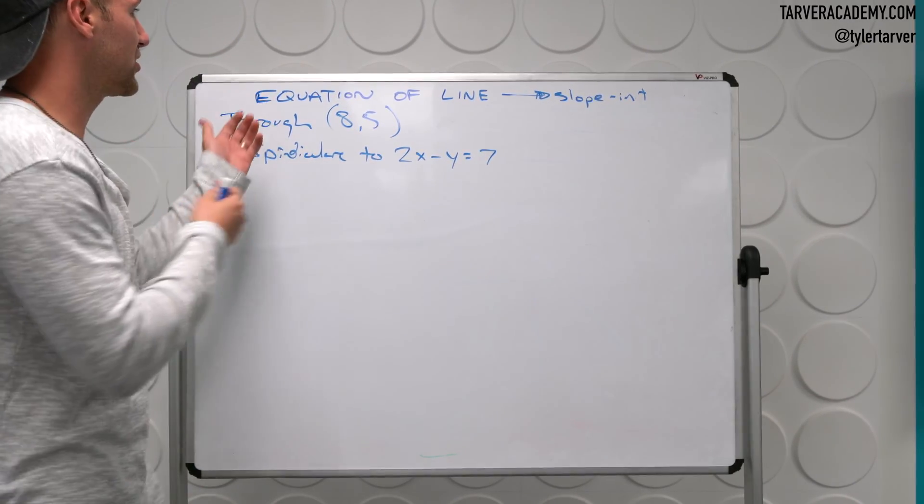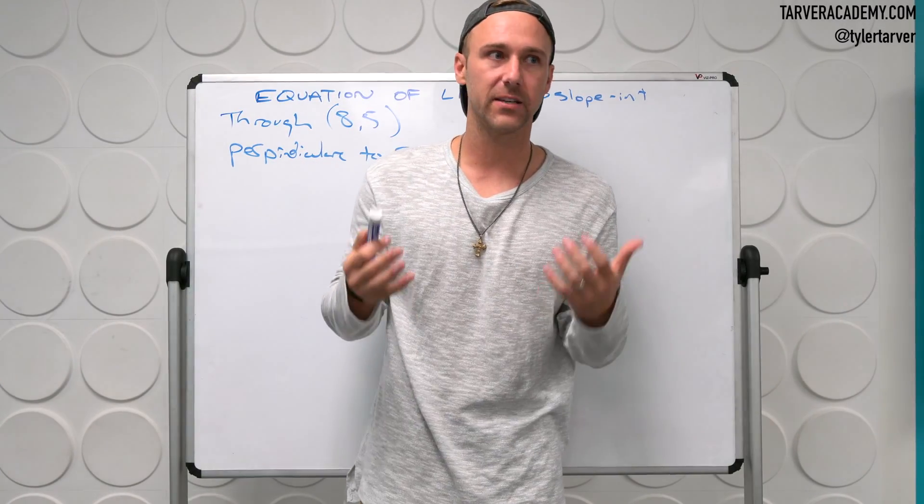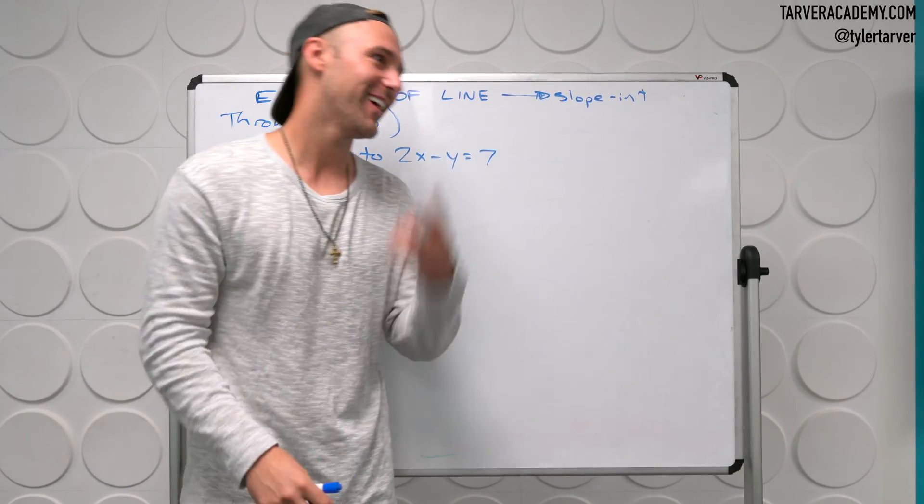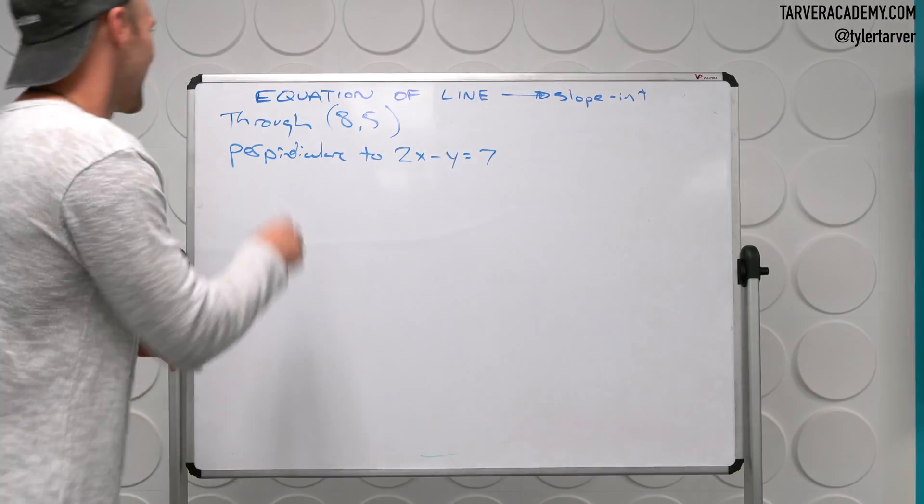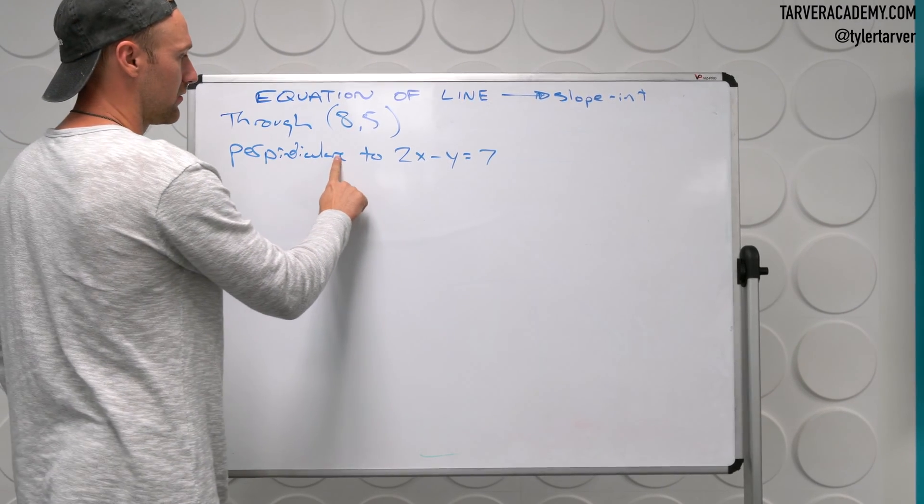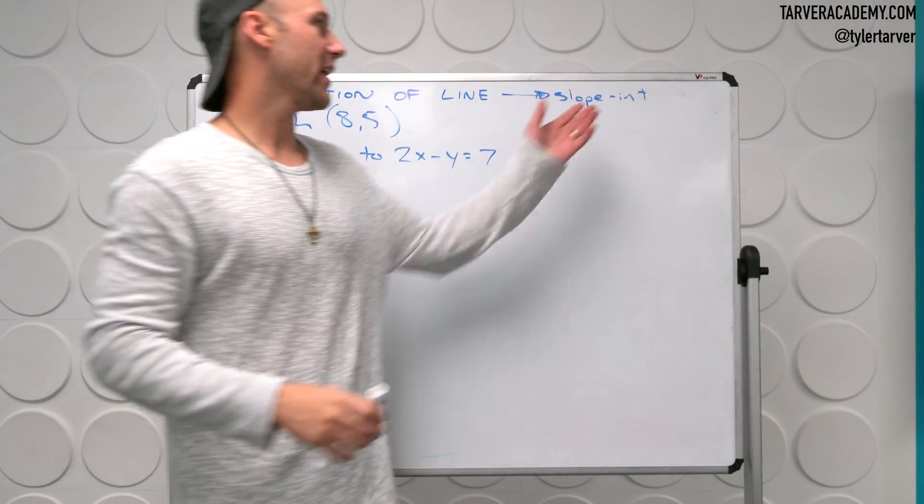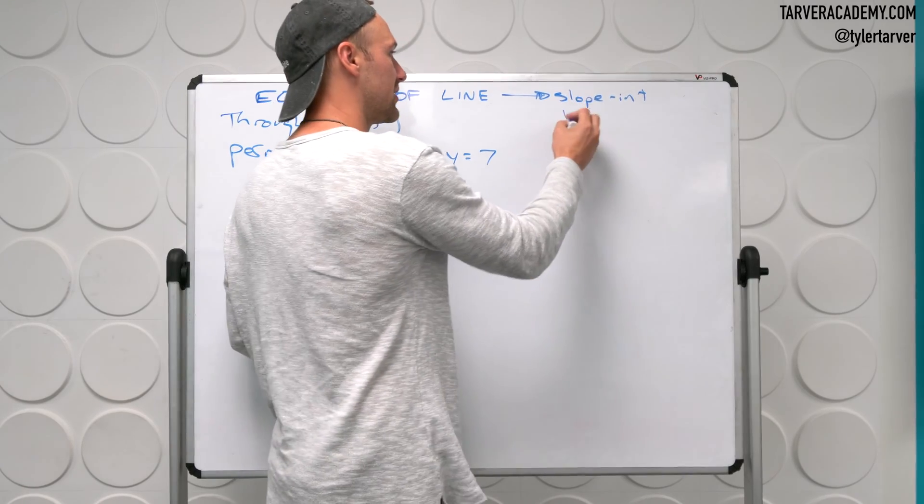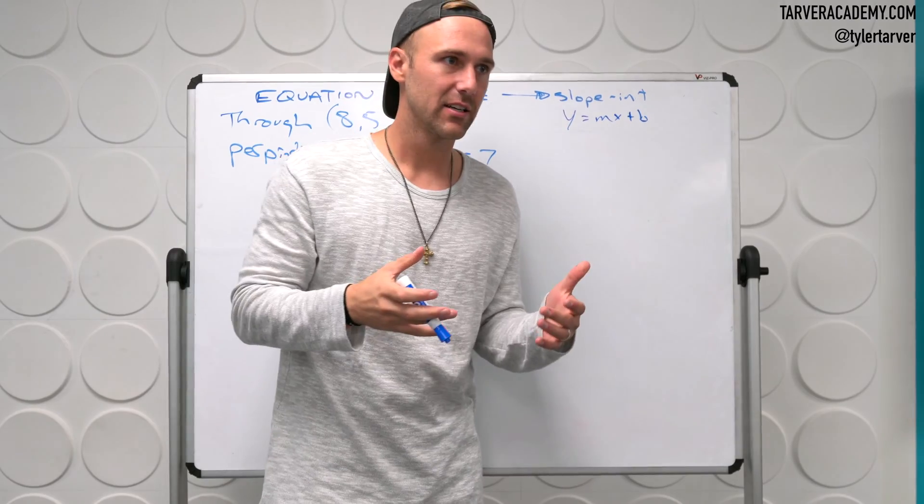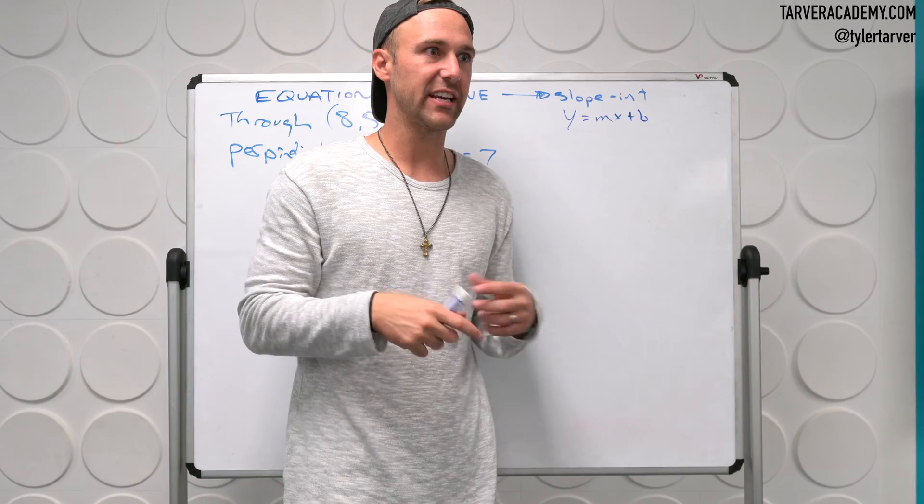Alright, so the instructions ask us to find the equation of a line, put in slope-intercept formula that meets the following criteria. And so it's like what you've been doing. Hey, what's up, Snapchat? It goes through this coordinate, and it's perpendicular to 2x minus y equals 7. So essentially what they're doing is, they're making us put it in slope-intercept form, which we know is y equals mx plus b. They're wanting us to put it in that,